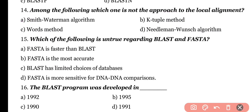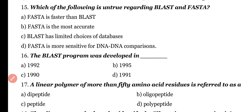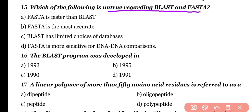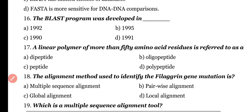Question number 15. Which of the following is untrue regarding BLAST and FASTA? Options: FASTA is faster than BLAST, FASTA is more accurate, BLAST has limited choices of database, FASTA is more sensitive for DNA-DNA comparison. The incorrect statement is option A, because BLAST is faster than FASTA, not the other way around.